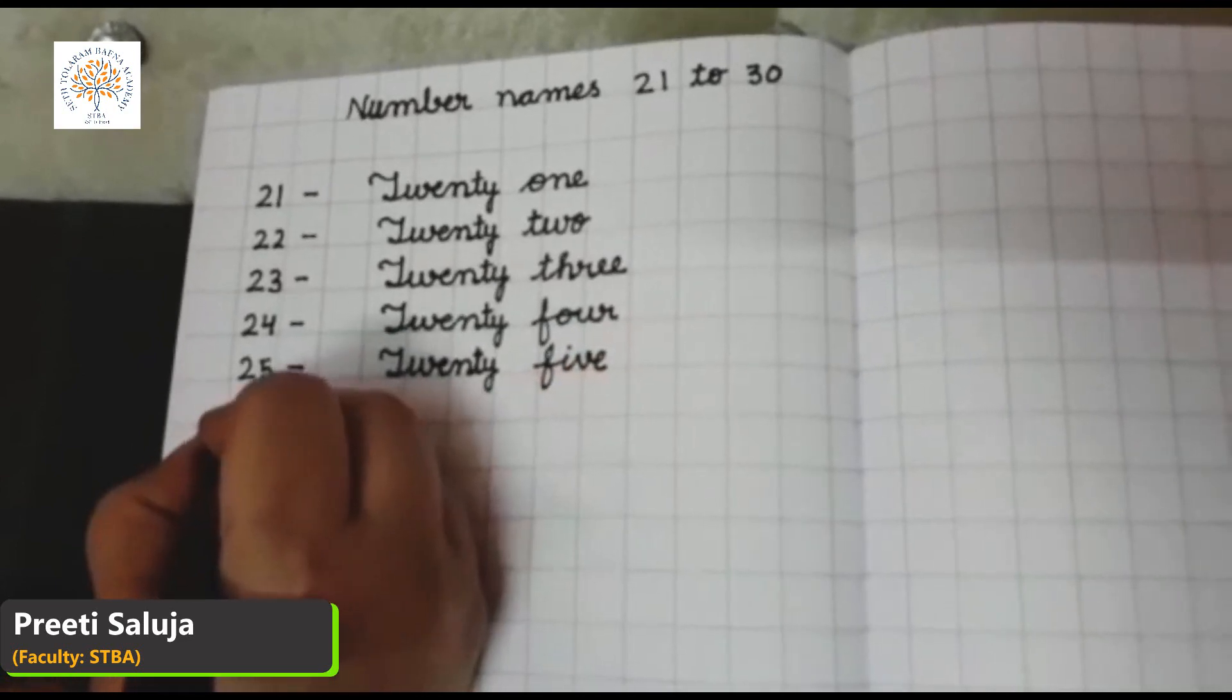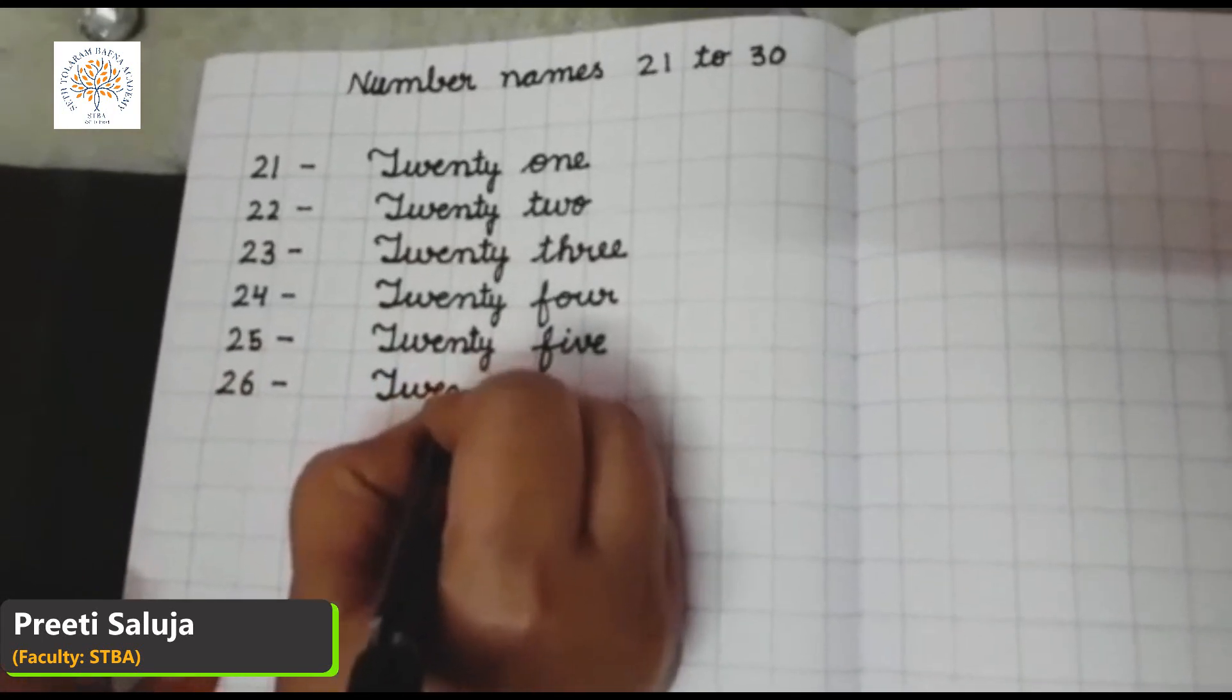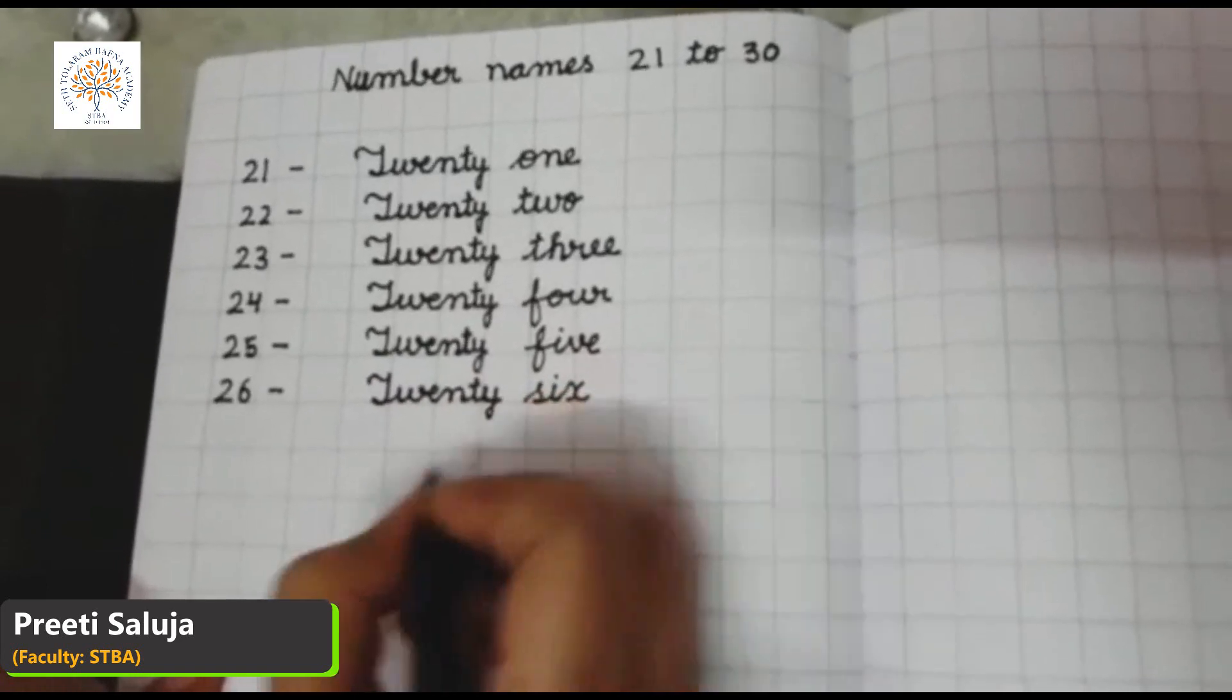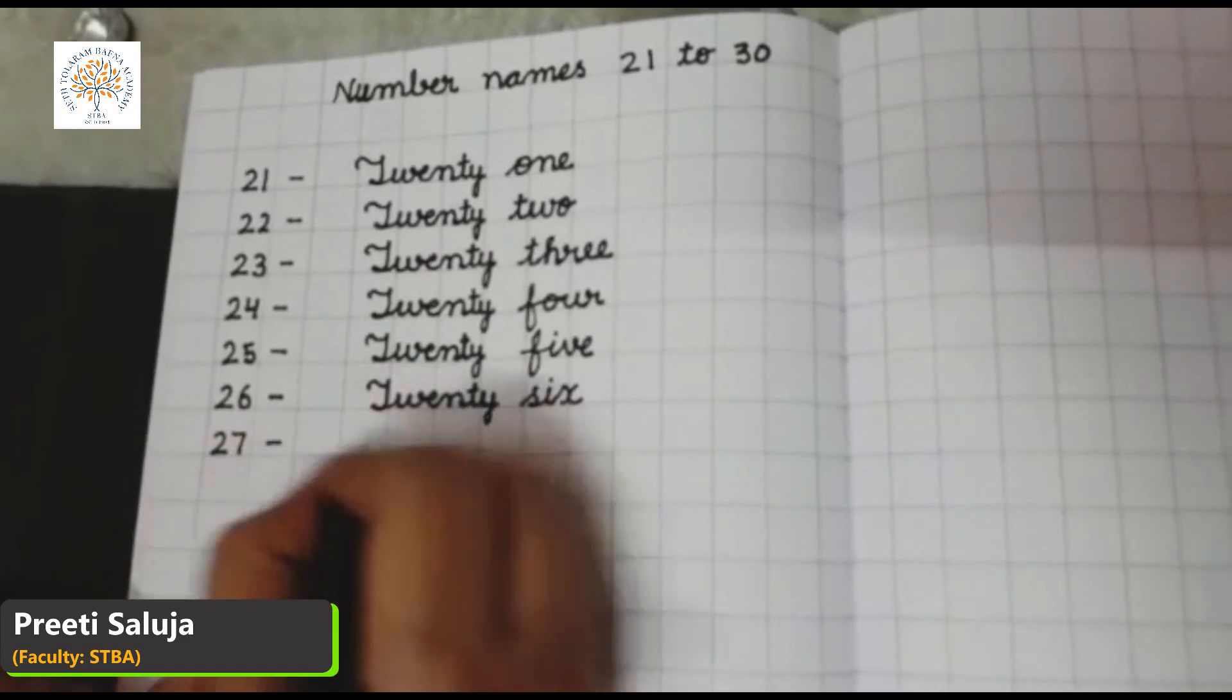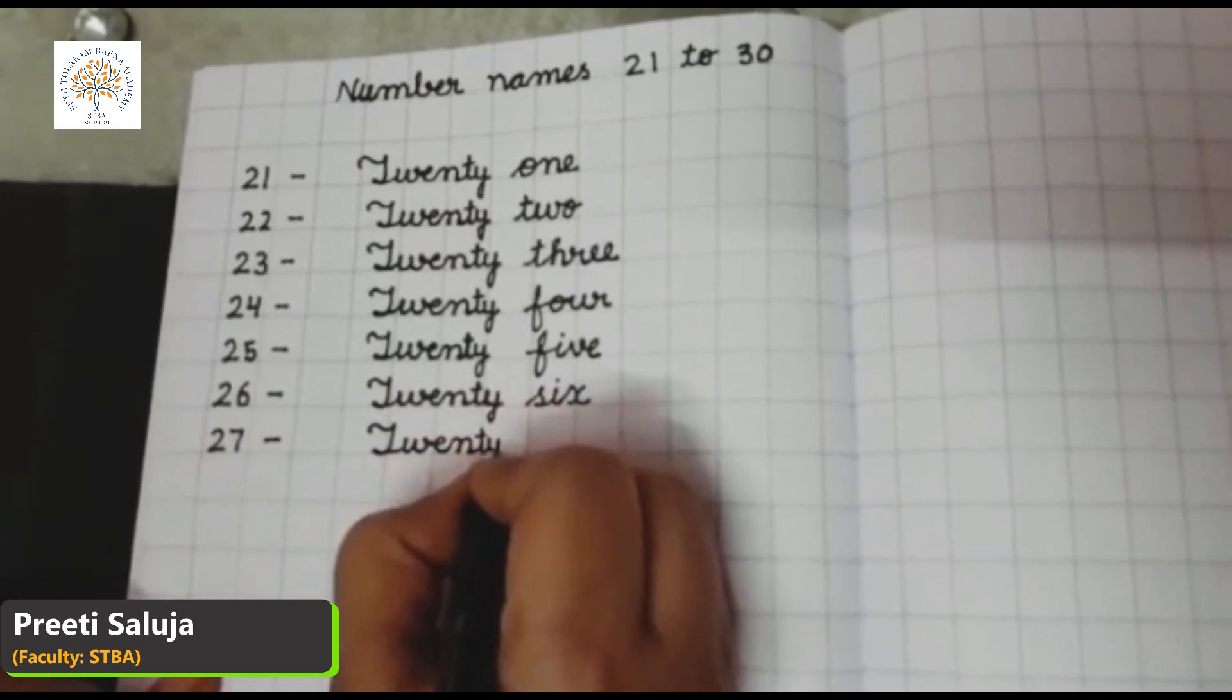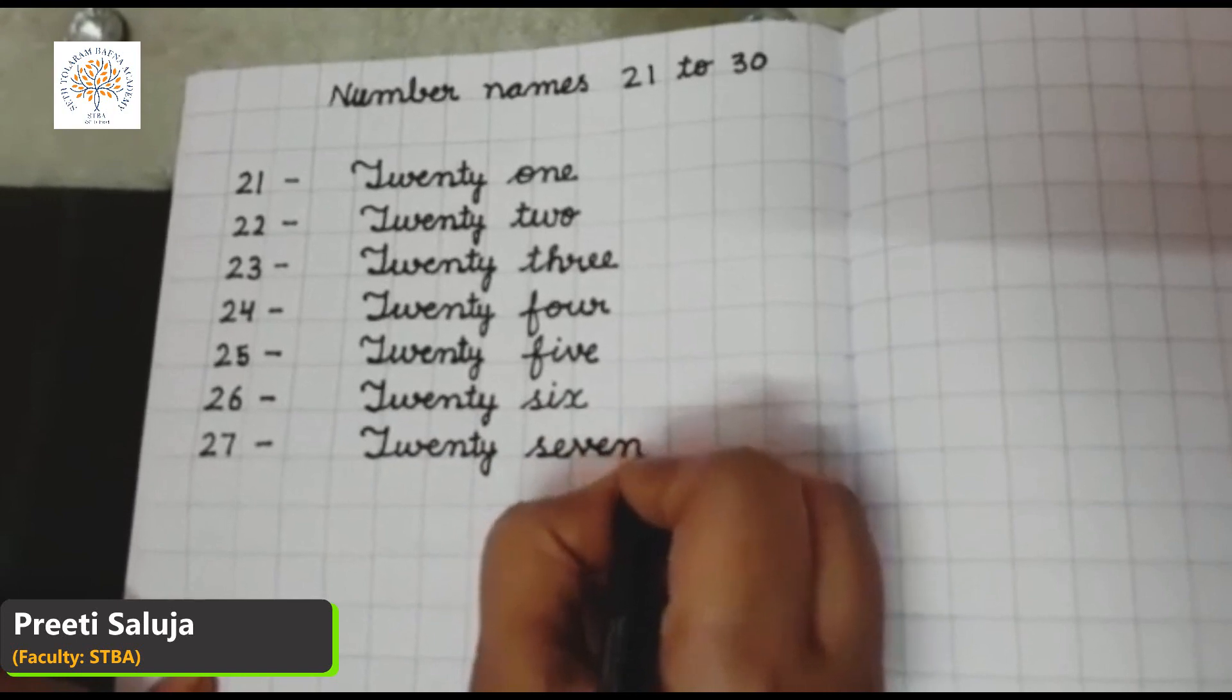26, T-W-E-N-T-Y, 20, S-I-X, 26. 27, T-W-E-N-T-Y, 20, S-E-V-E-N, 7.